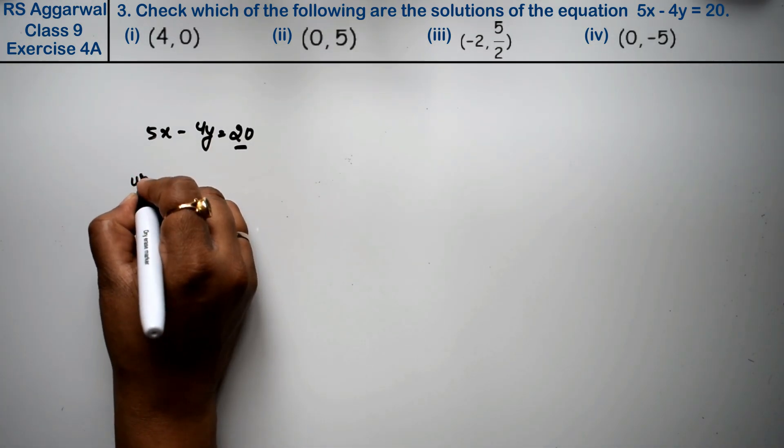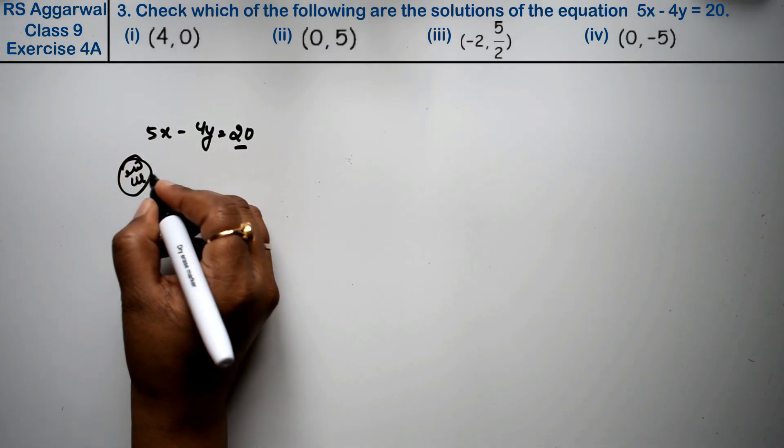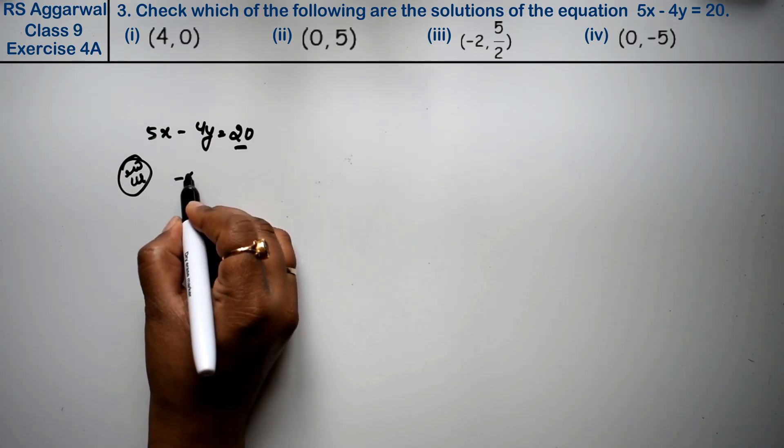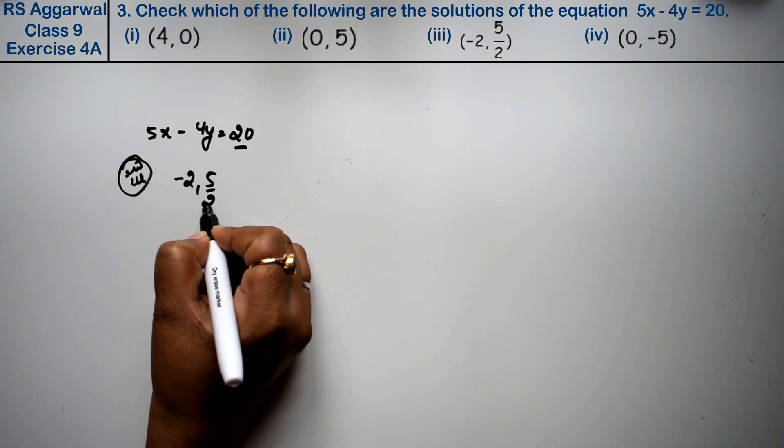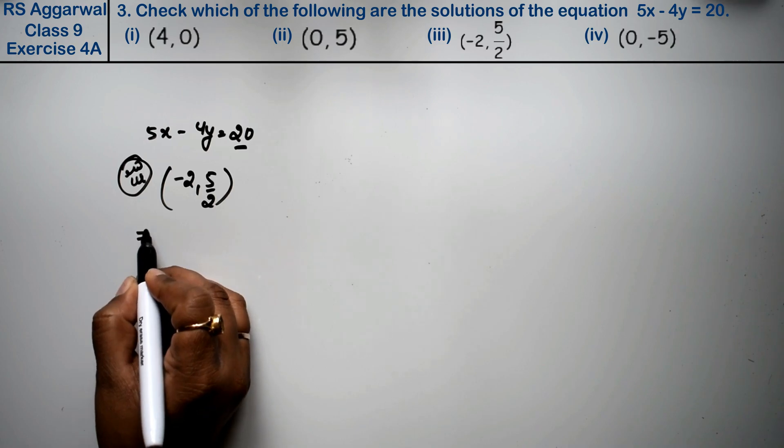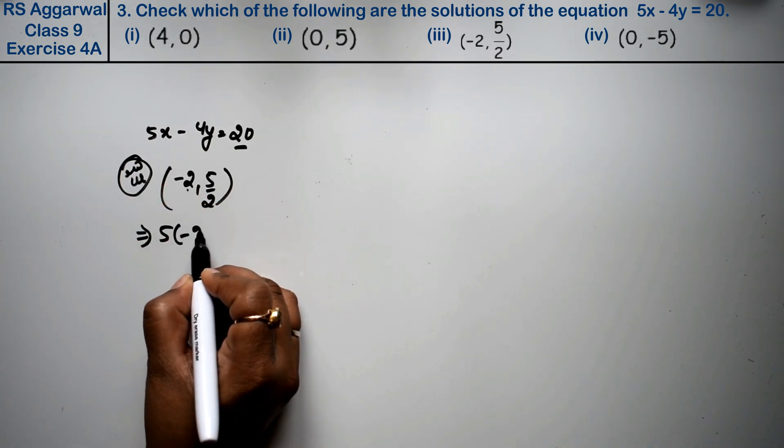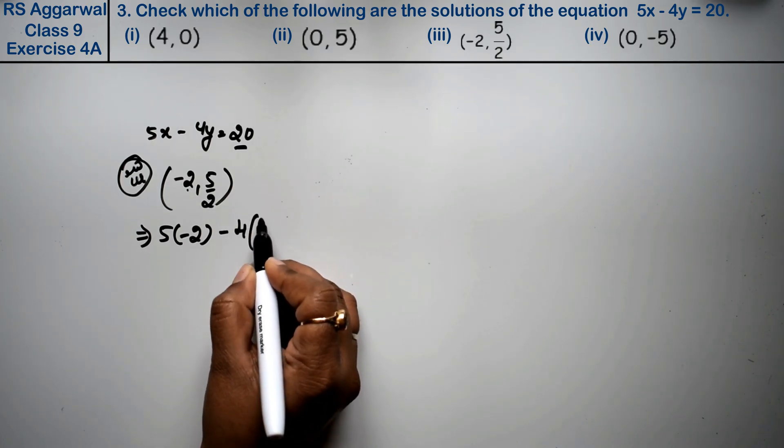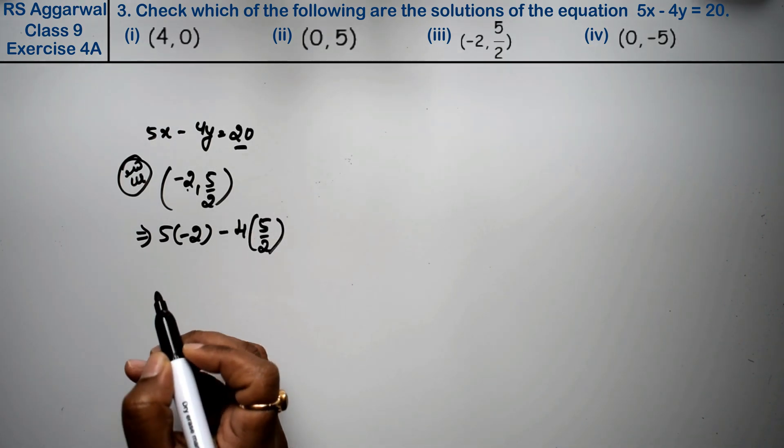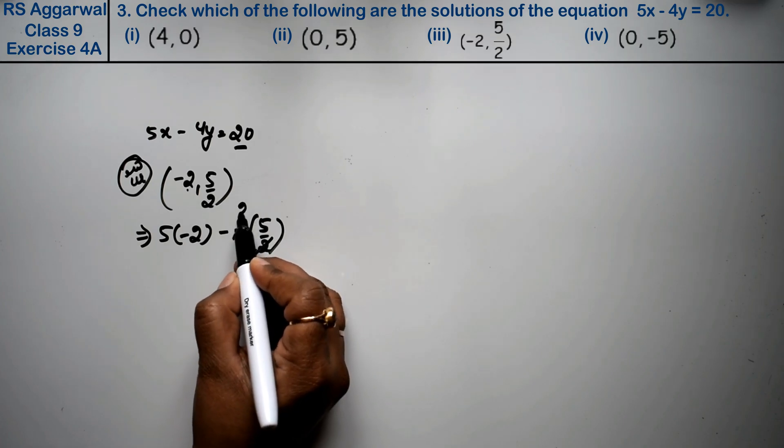Let's see. Third part is minus 2 and 5 upon 2. So let's see. We will keep the first value of x, that is minus 2, and we will keep 4 with 5 upon 2. So let's see, 2 twos are 4.